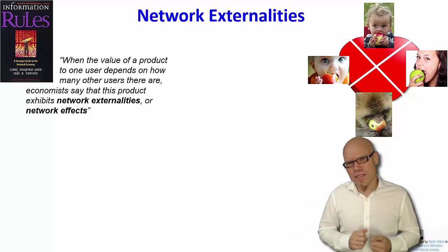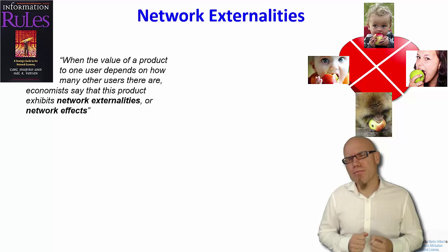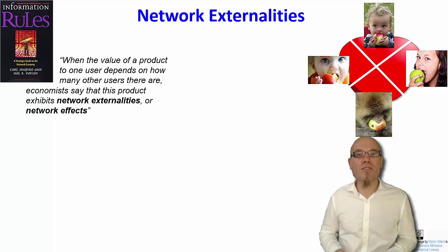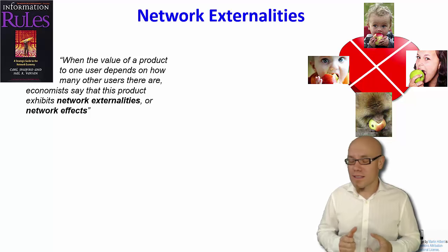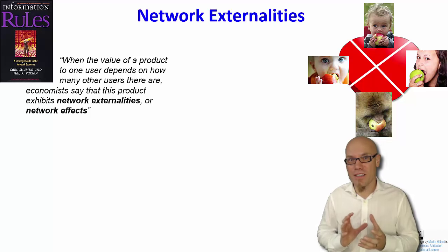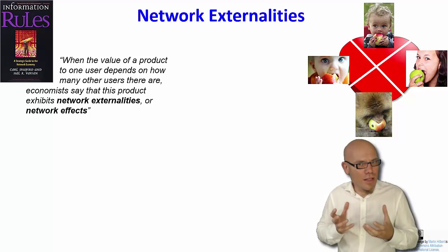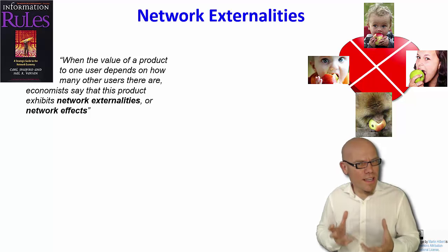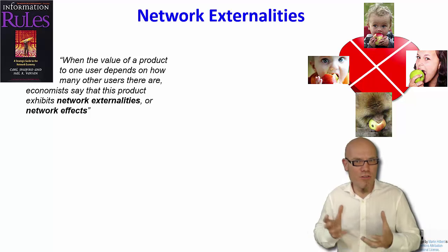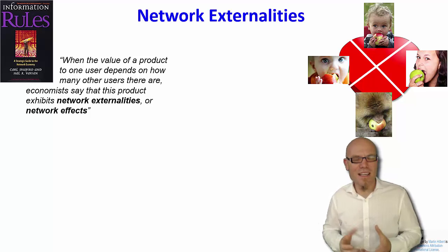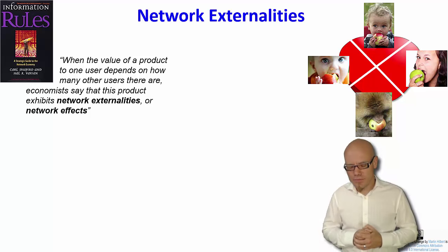Now information networks exhibit positive network externalities — meaning that the value of the product increases the more people use it. This is something very difficult to wrap your mind around if you're a traditional economist, because usually economics are governed by the law of scarcity: more people, less left over — negative network externalities. So how can you think about that?